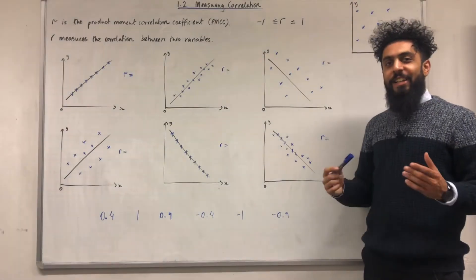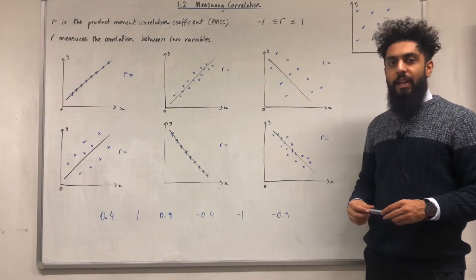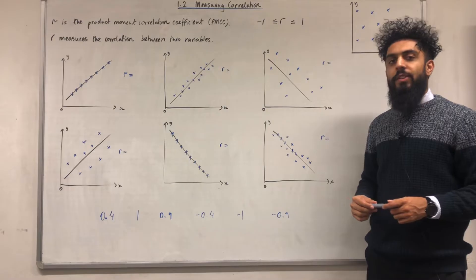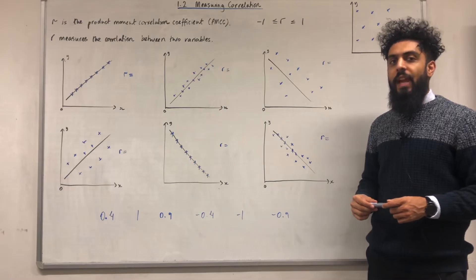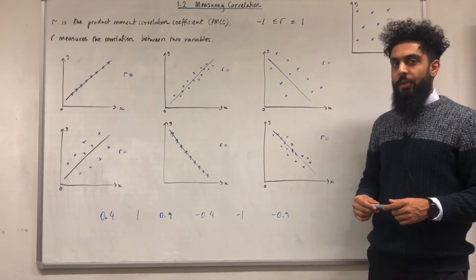Welcome back. In this video I'll be looking at 1.2 measuring correlation. 1.2 represents chapter 1, section 2 of the Pearson A-Level Maths Applied Maths Year 2 textbook.